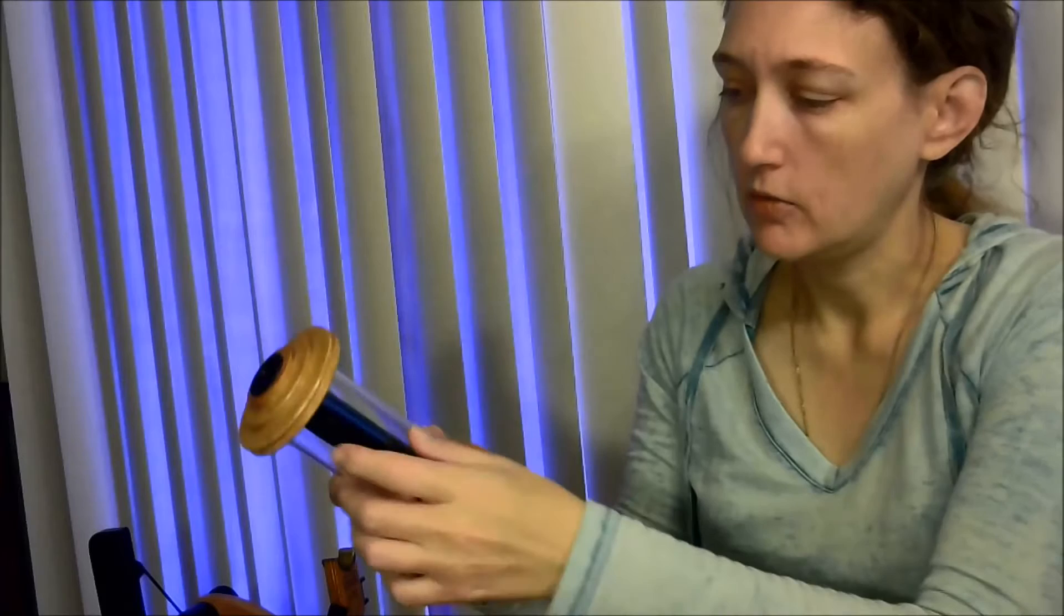Cheat number one: you buy a special bobbin, kind of like this, which has this hard plastic casing, and it reduces the difference in diameters between your flyer and your bobbin.